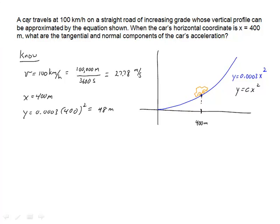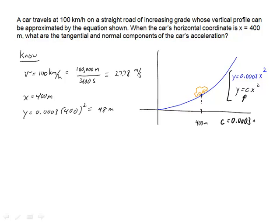Now I have a car traveling at 180 kilometers per hour on a straight road, so there's no movement in and out of the page. But the grade upon which it's moving does change, approximated by this equation. I'll write this with a C out in front, so C equals 0.0003. Given that y equals 0.0003·x², and y has units of length, 0.0003 must have units of 1 over length — because it's being multiplied by x squared and we want to end up with length. So C equals 0.0003 meters to the minus 1, to be more precise.